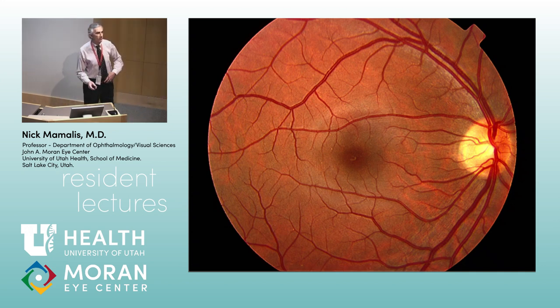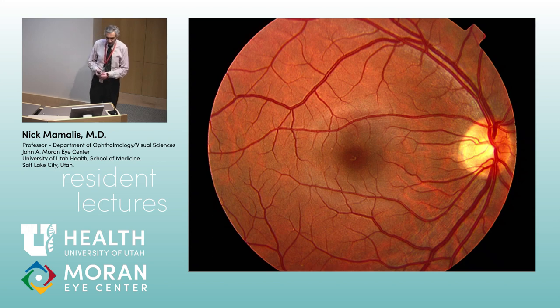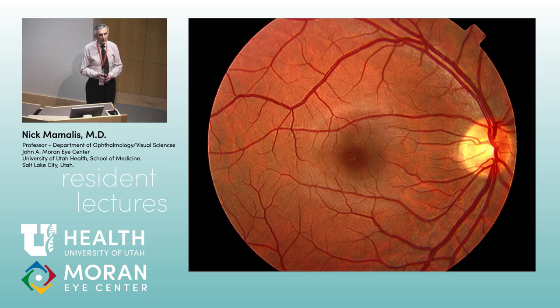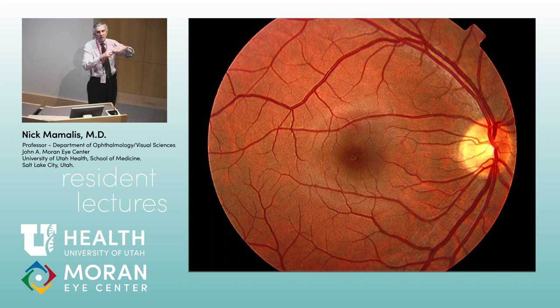Intern question for Catherine: what do onions, ogres, and retinas have in common? Layers — they all have layers. So we're going to spend a little bit of time on the retinal layers because it's really important that you recognize each layer of the retina, what they do, and why they're important.